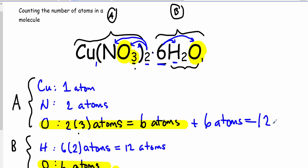This is a good example of a more complicated formula where we have not only brackets and subscripts, but also coefficients right in the formula.